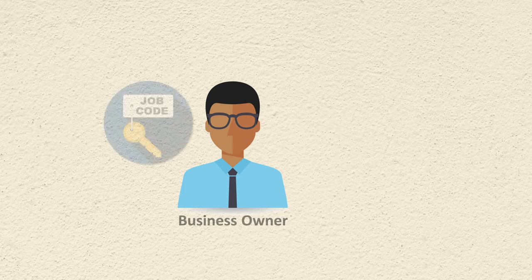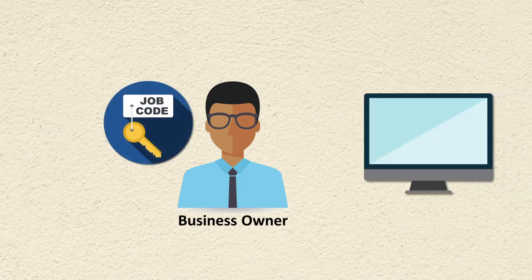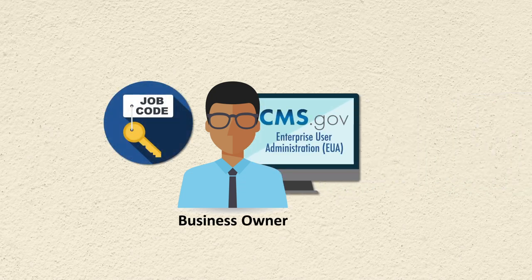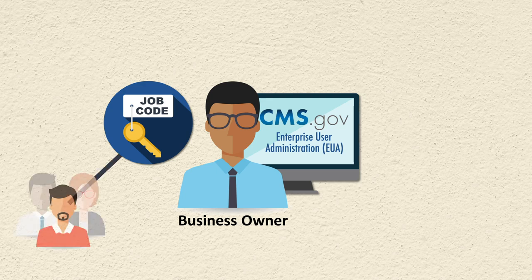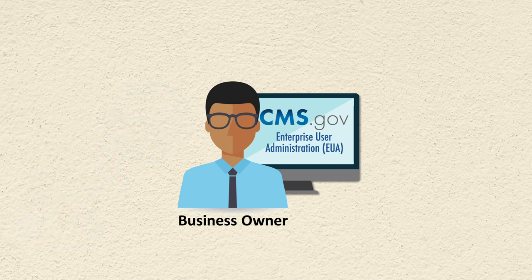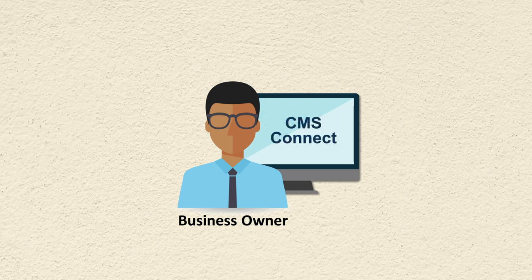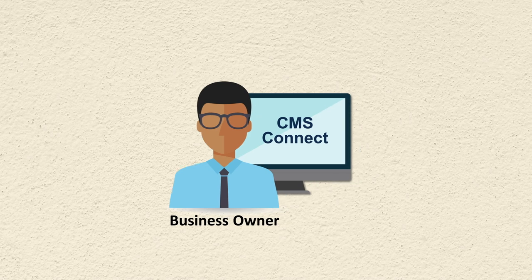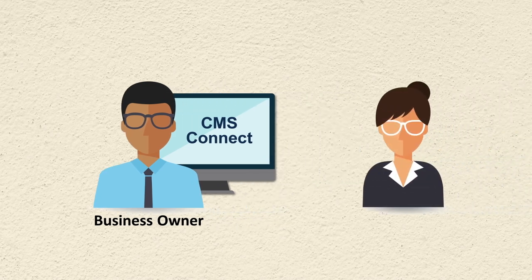If you are the business owner for a job code and need it modified, you can modify them yourself in EUA. Business owners can modify all fields in the job code except for endpoint group connections. Endpoint groups allow the EUA application to provide access to your application or service. For endpoint group changes or additions, the business owner will need to open a service request. This can be done through the CMS Connect self-service portal. Job code changes can also be requested by the manager of the business owner.